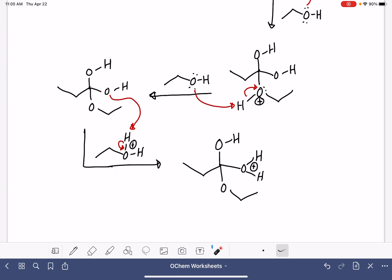Now, look at what we've made. We've made an amazing leaving group, so let's take a lone pair of electrons and move those electrons down and get rid of that leaving group. That will give us this.